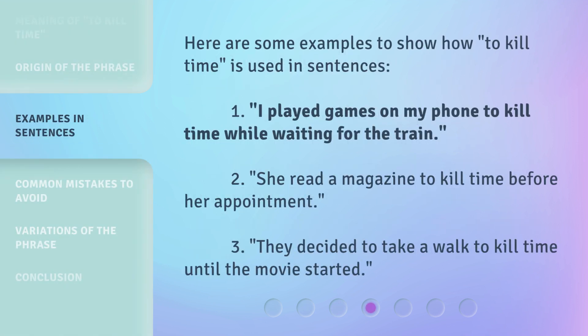Here are some examples to show how 'to kill time' is used in sentences. 1. I played games on my phone to kill time while waiting for the train. 2. She read a magazine to kill time before her appointment. 3. They decided to take a walk to kill time until the movie started.